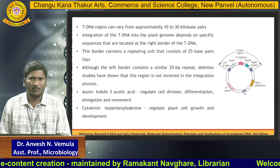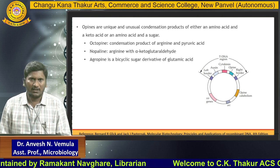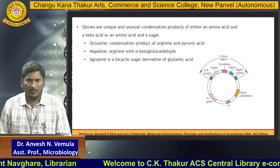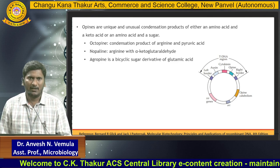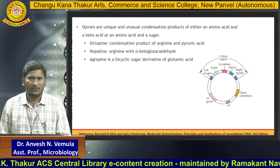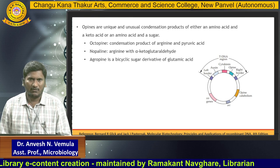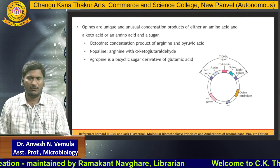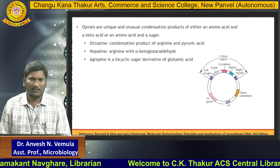The cytokinin gene specifically synthesizes isopentanyl adenine, a cytokinin that regulates plant cell growth and development. Opines are unique condensation products of either an amino acid or a keto acid with an amino acid or a sugar. There are three different types of opines: octopine, which is a condensation product of arginine and pyruvic acid; nopaline, formed from arginine and alpha-ketoglutarate; and agropine, a bicyclic sugar derivative of glutamic acid.